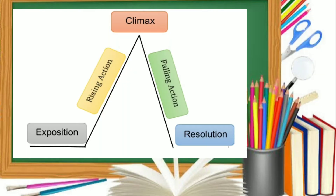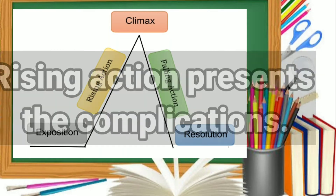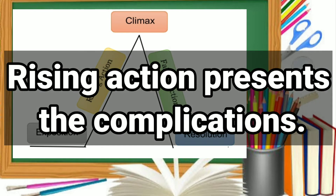Next is the rising action. In this part, the events in the story become complicated and the conflict is revealed — showing what conflict or problem the main character or protagonist will face. It is the incident that creates a dramatic climax.